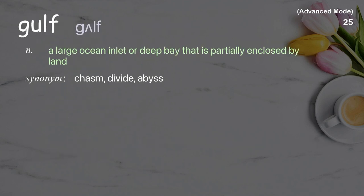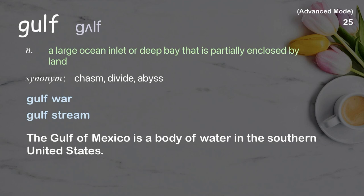Gulf: A large ocean inlet or deep bay that is partially enclosed by land. Examples: Gulf War. Gulf Stream. The Gulf of Mexico is a body of water in the southern United States.